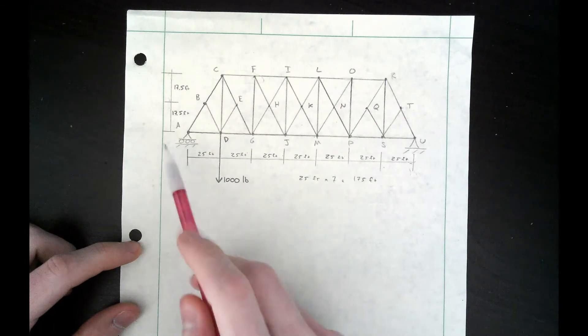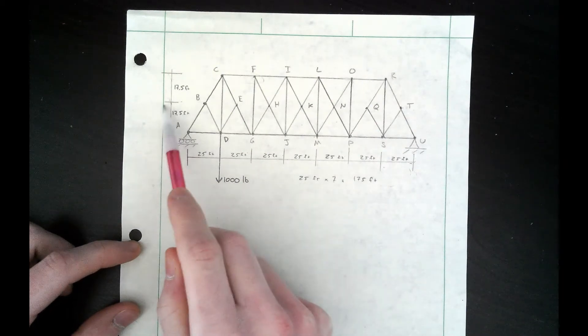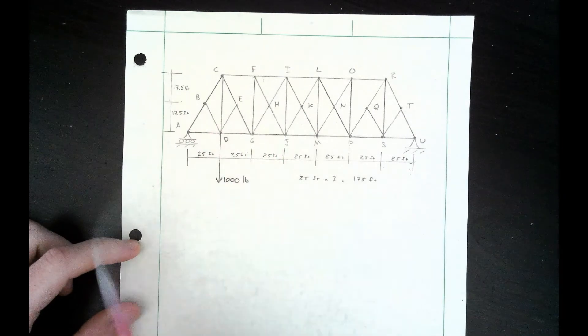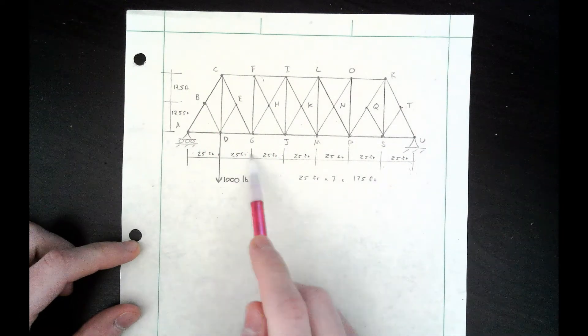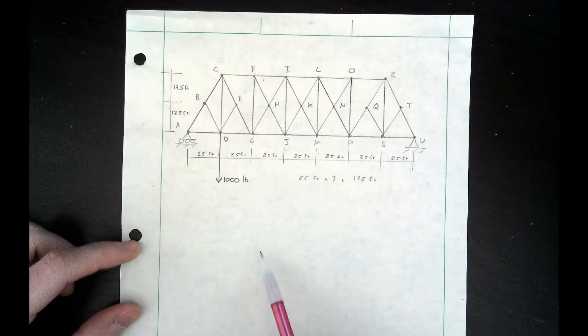We have some dimensions: 17.5 feet to the halfway mark and then another 17.5 feet to the top of the bridge. Each section of the bridge is 25 feet away from each other, so in total the bridge is 175 feet long.